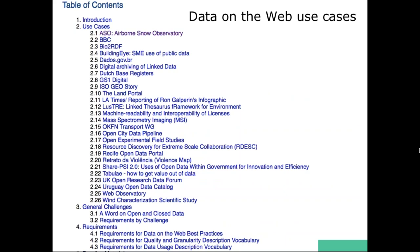This is the first document we published. Everything we are going to show here is online — it's very well documented and you can access it very easily. It was published as a note in 2015, and it was very important because from those use cases we got many, many challenges. For instance, data.gov.br — which is our equivalent of data.gov.us — we used it as an example. We had many challenges that they faced when publishing data on the web, and from many different challenges all over the world, we got the requirements we had to achieve in developing the best practices.